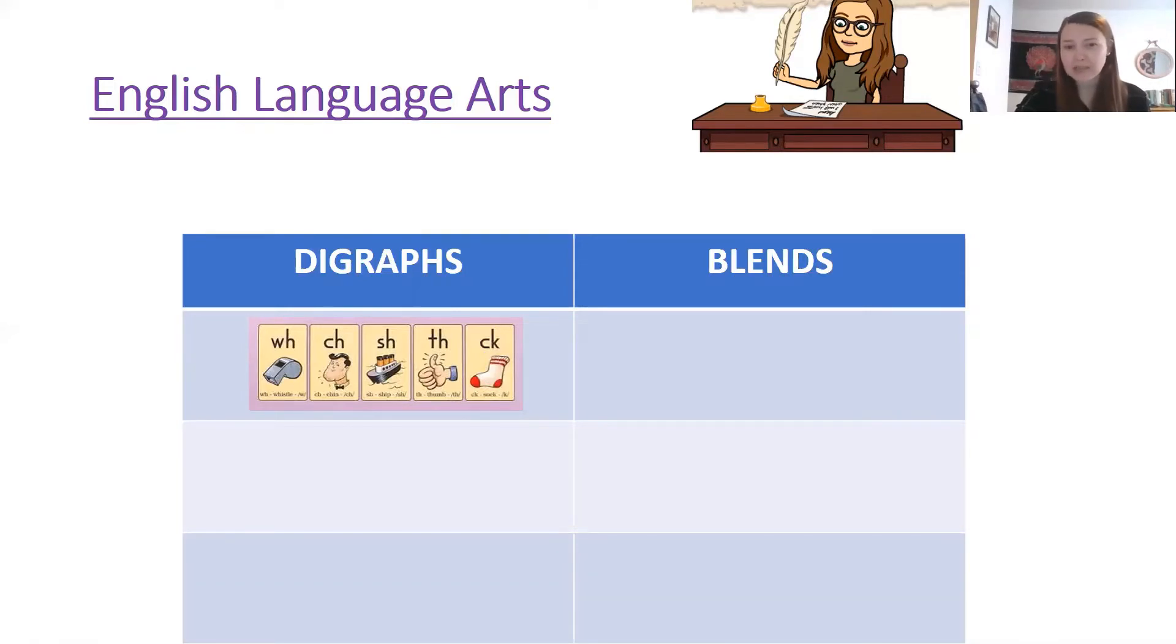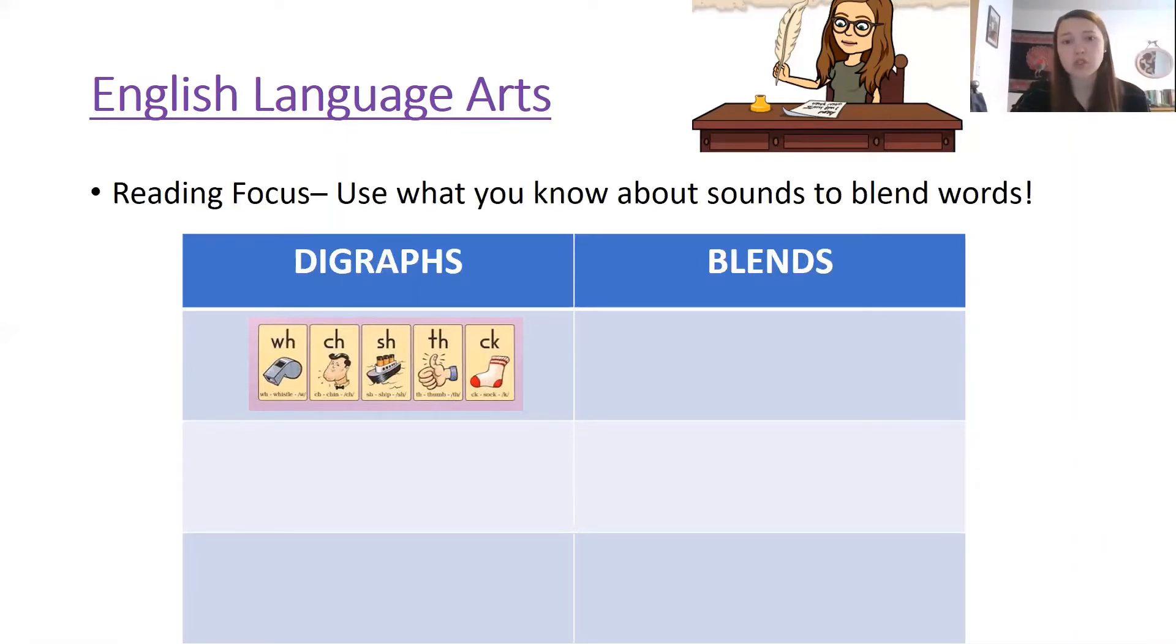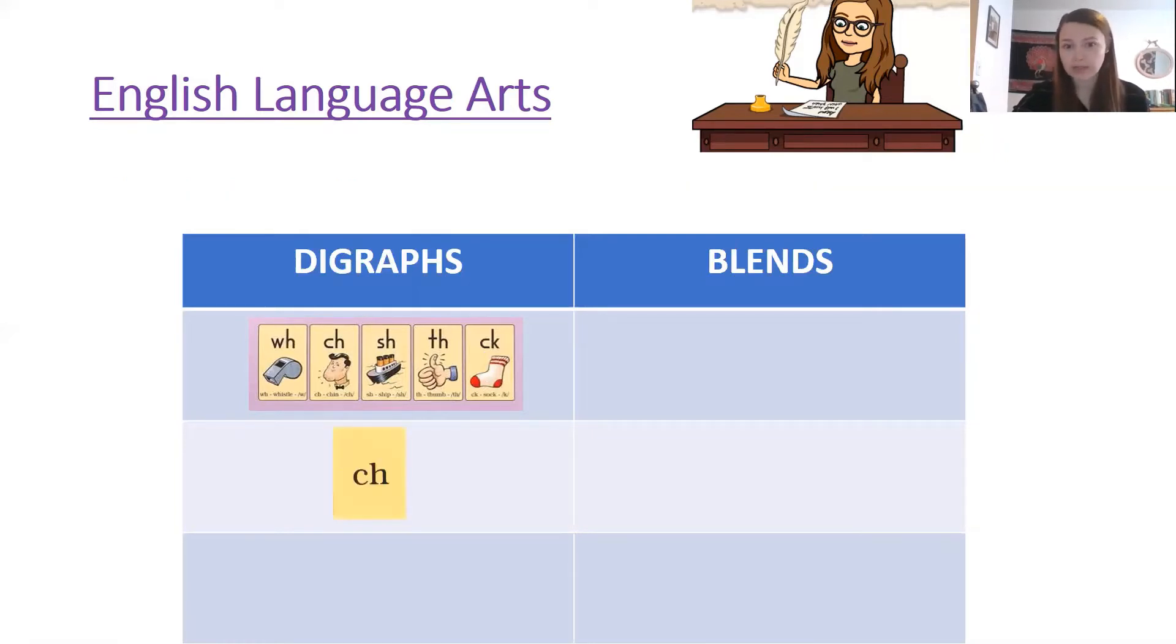So digraphs are special because they are two letters that come together to make one sound. When we see our sound cards for digraphs we know that our digraphs actually only show up on one sound card like you see in C-H here because they only make one sound. So we have C-H, ch, and in a word when we tap it we only need to give digraphs one tap.